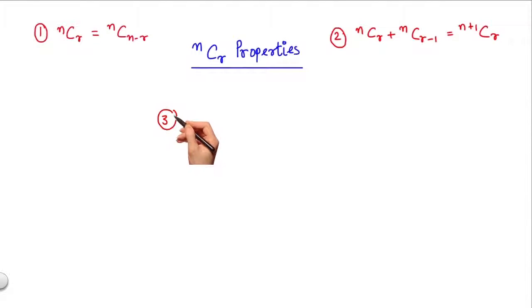The third property is given as NCR divided by NC(R-1) equals N minus R plus 1 divided by R. Please carry out the derivation of this formula as an exercise.